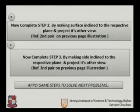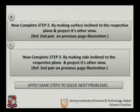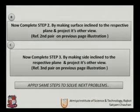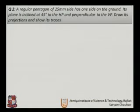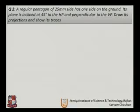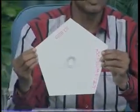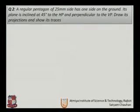We project the plane and obtain its other view, as seen in the reference figure. These are the basic steps we use to solve problems, and we will apply the same steps to the next problems. Let us take an example: a rectangular pentagon shape is given, a pentagon of 25 mm side.